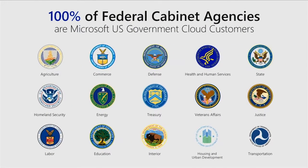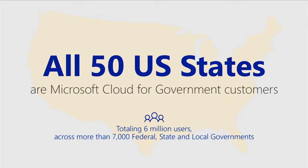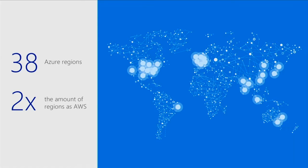The cloud is dedicated to federal, US state and local civilian organizations. We have 100% of federal cabinet agencies on the Microsoft Government Cloud today, 50 US state governments, 600 million users, and 7,000 federal, state, and local governments. Azure worldwide has 38 regions — twice that of our closest competitor. Microsoft's global reach gives context to the resources put into security and other investments that all Azure customers benefit from.